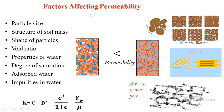The factors affecting permeability are: particle size, structure of soil mass, shape of particles, void ratio, properties of water, degree of saturation, adsorbed water, and impurities in water. These are the different factors which affect the flow of water through the soil mass. The general equation for the coefficient of permeability is: k = C·d²·e³/(1+e)·(γw/μ), where k is the coefficient of permeability.